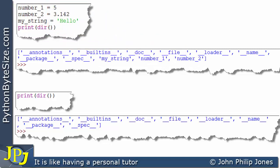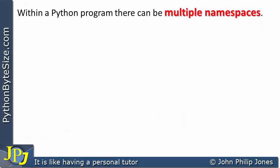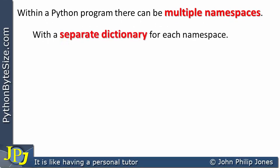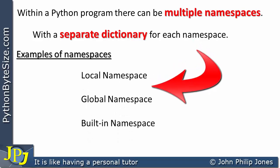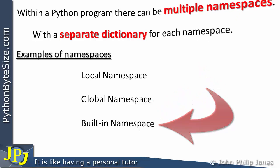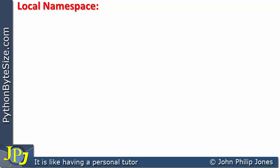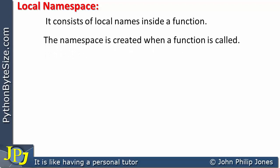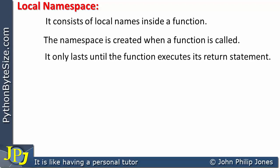What I've just described is a repetition of what you've seen in the previous videos in this short series, but it was important to remind you at the beginning. Within a Python program there can be multiple namespaces, with a separate dictionary for each. Examples include a local namespace, a global namespace, and a built-in namespace. For the rest of this video I'm going to consider the local namespace, which consists of local names inside a function, is created when the function is called, and only lasts until the function executes its return statement.